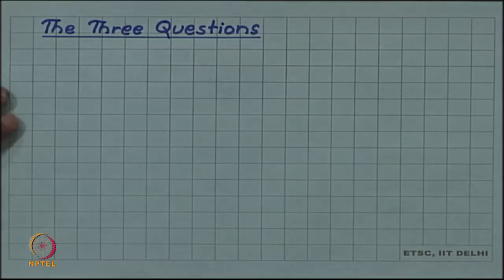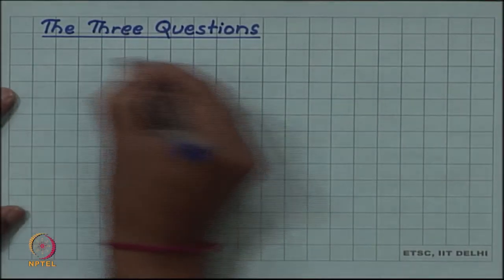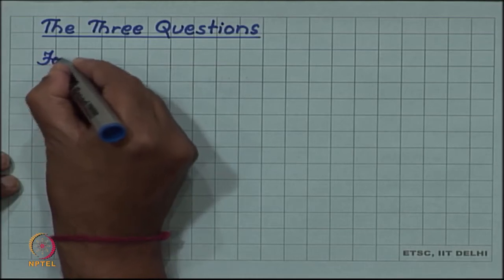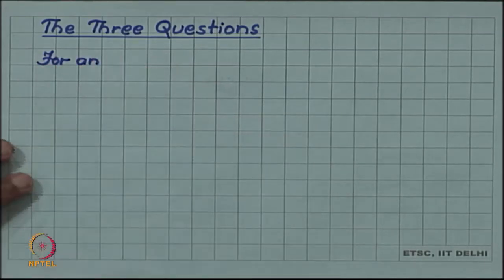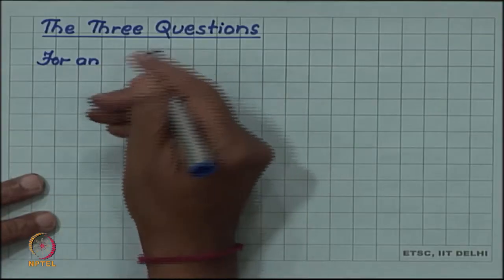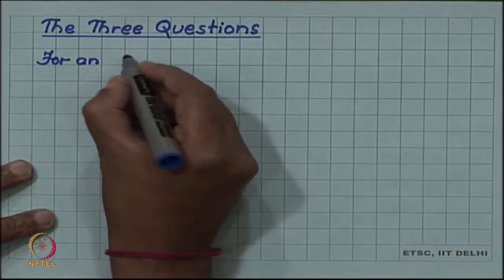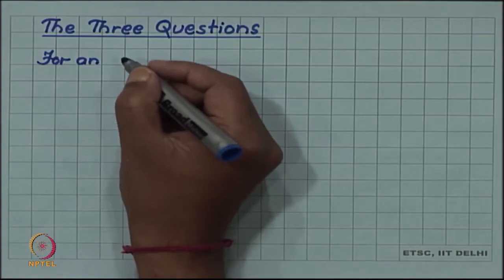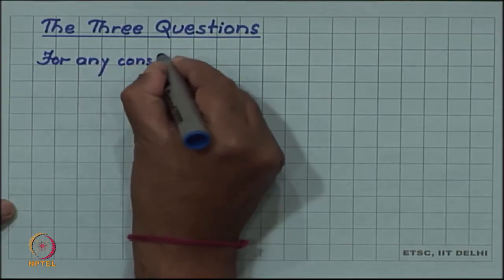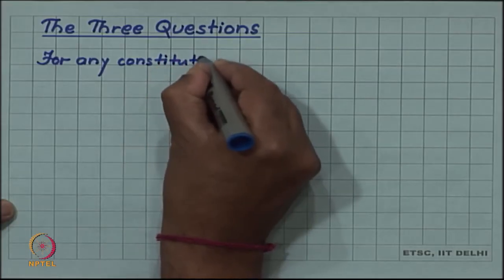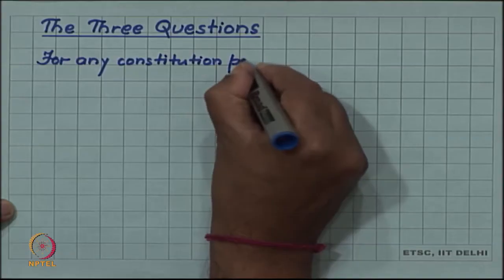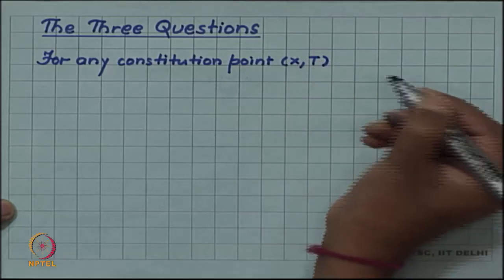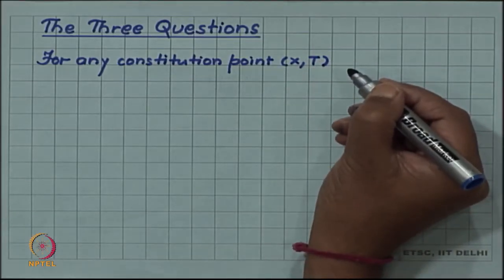With respect to any constitution point, three questions can be asked, and the phase diagram can answer those questions. So let us list those three questions. For any constitution point (x, T), we have three questions that are important to learn how to use the phase diagram to answer.